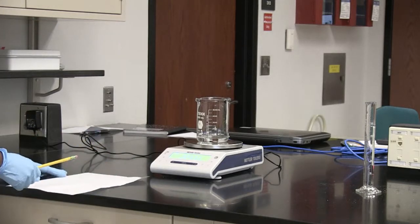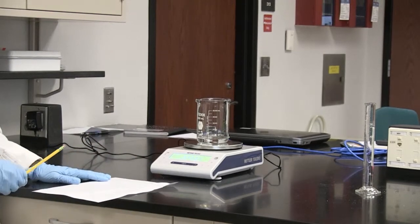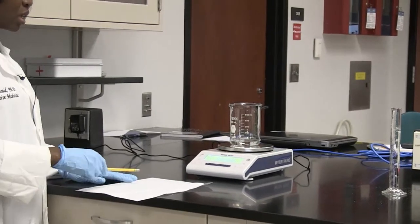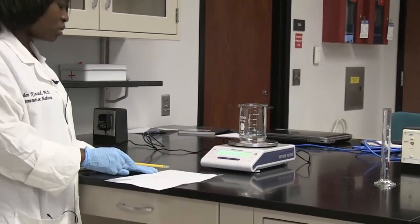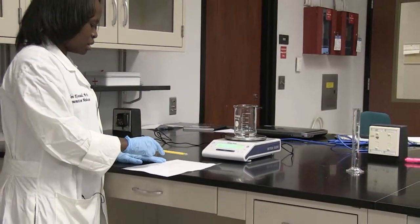So I can therefore determine the mass of the water by subtracting the mass of the beaker plus water from the mass of the beaker itself.